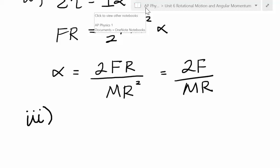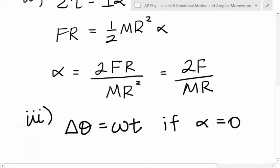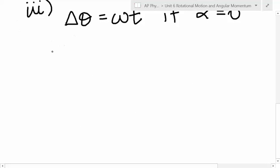So, part three, you're asked to find the angular displacement of the disk in two seconds. You just solved for the angular acceleration. Hint, hint. You're going to use that. Next, okay, so yes, you're right. Angular displacement is equal to the angular speed times time if the angular acceleration is zero. Sure. But is the angular acceleration zero? No way.